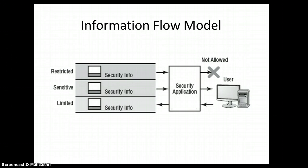The information flow model is quite interesting. You have different sensitivity labels on the left-hand side — restricted, sensitive, limited — and different information available. An application can massage the data, and based on the identification, authentication, and authorization of the person, can make determinations on who can see what, when, and where, and for how long. That is essentially the information flow model.